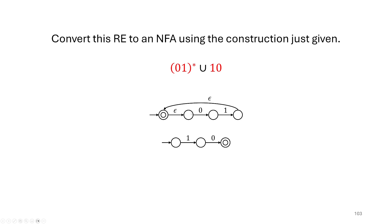Now I want to apply the construction for the Kleene star operator to the first machine. We take the old accept state — in this case I've removed it as an accept state — and create a new accept state that is also a new start state. This ensures we can handle the epsilon case: zero copies of the string go directly to the accept state, and if we follow the epsilon transition back we need at least one copy, then we can repeat the loop as many times as we want. So we've captured the Kleene star on '01'.